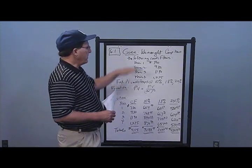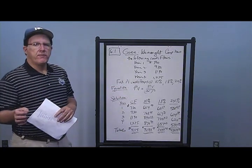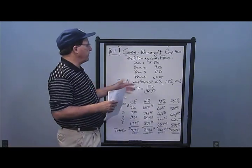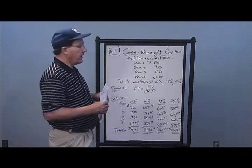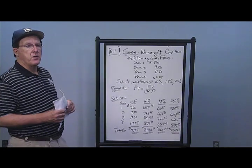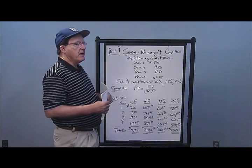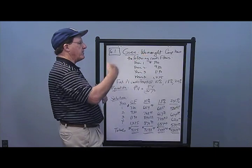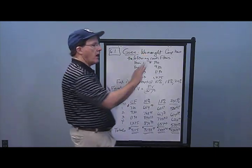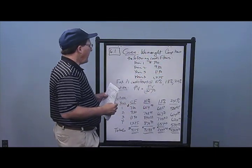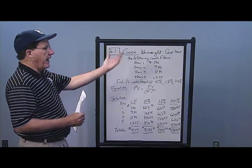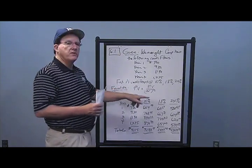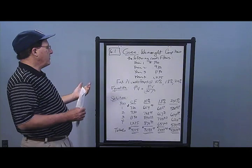These are four distinct cash flows, versus Chapter 5 where we had one lump sum — now we have several lump sums coming in over time. I encourage you to draw a timeline on these problems to show these cash flows coming in and ask yourself: are these being discounted to the left or compounded to the right? In this case, they're discounted back to today because we're looking for present value. Present value means today.